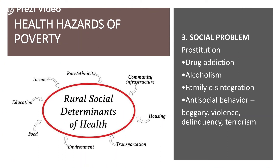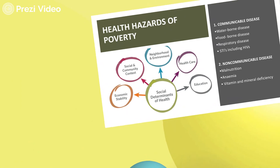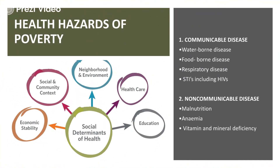Further discussing health hazards related to social problems — there are various social evils which exist in our society even today, like prostitution, drug addiction, alcoholism, family disintegration, anti-social behaviour, and certain tendencies like beggary, violence, delinquency, and terrorism. People living the life of poverty are more influenced by these social problems, which again give rise to health hazards. Other determinants include economic stability, social and community context, neighborhood and environment, and health care facilities at a particular location — all of which impact people living in poverty.